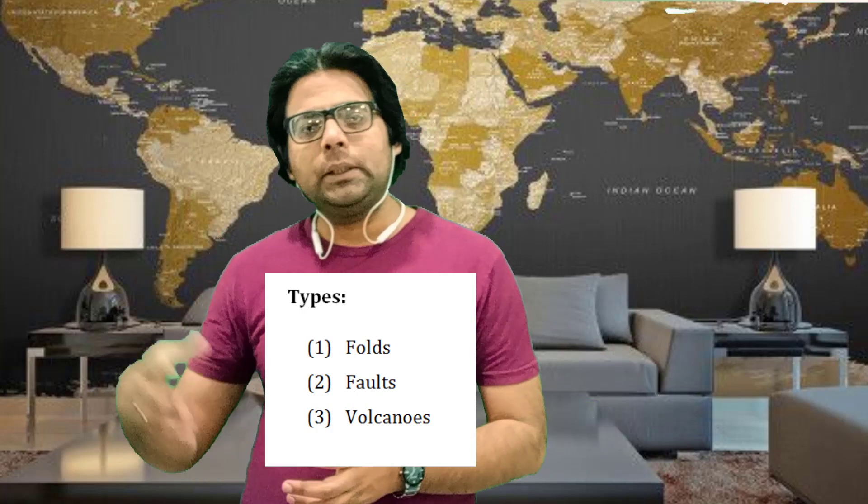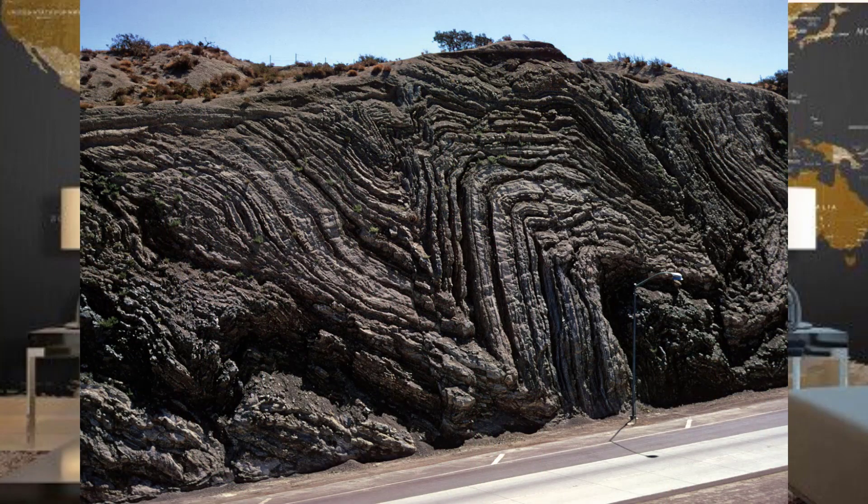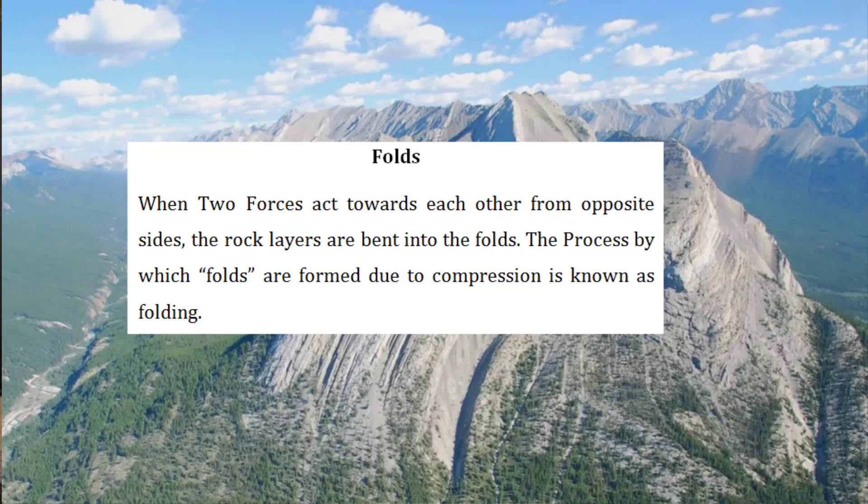Talking about the endogenic forces, we divide them into three further types for ease of understanding: folds, faults, and volcanoes. When two forces act towards each other from opposite sides, the rock layers are bent into folds. The process by which folds are formed due to compression is known as folding. The material inside is pressed and tends to go upwards, and the landform created is known as a fold.